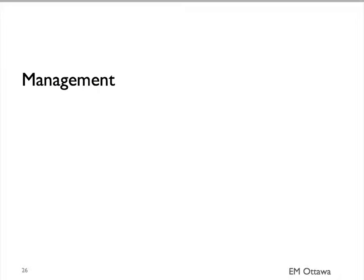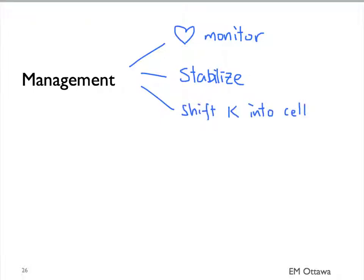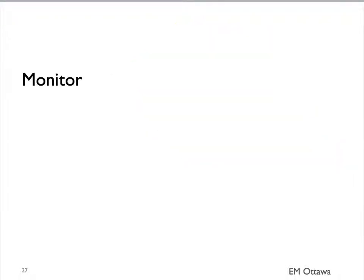How do we manage patients with hyperkalemia? It consists of monitoring the patient, stabilizing the myocardium, shifting the potassium into the cells, and eliminating potassium from the body. We will discuss each one of them. First, monitor. The patient needs to be put on a cardiac monitor. If we haven't done so already, a 12-lead ECG needs to be done.